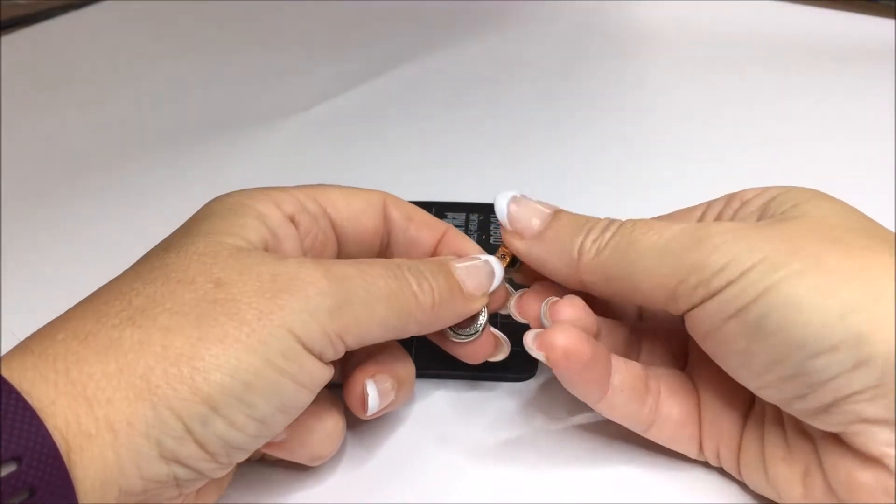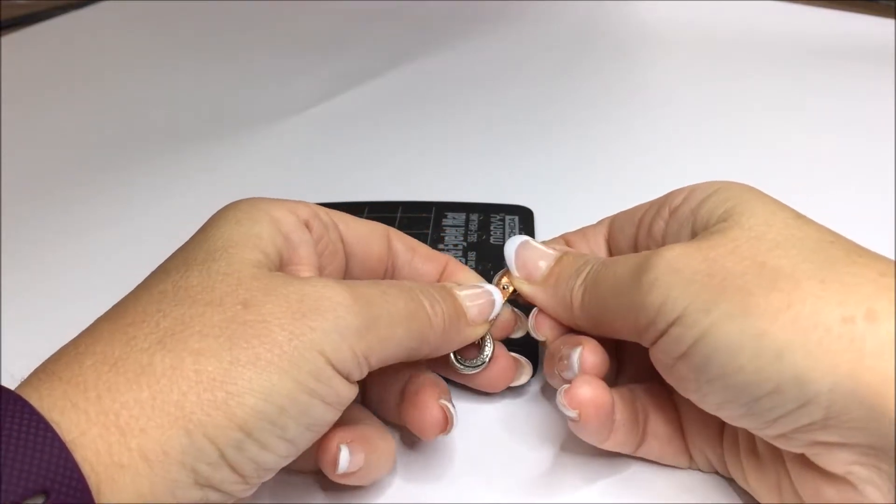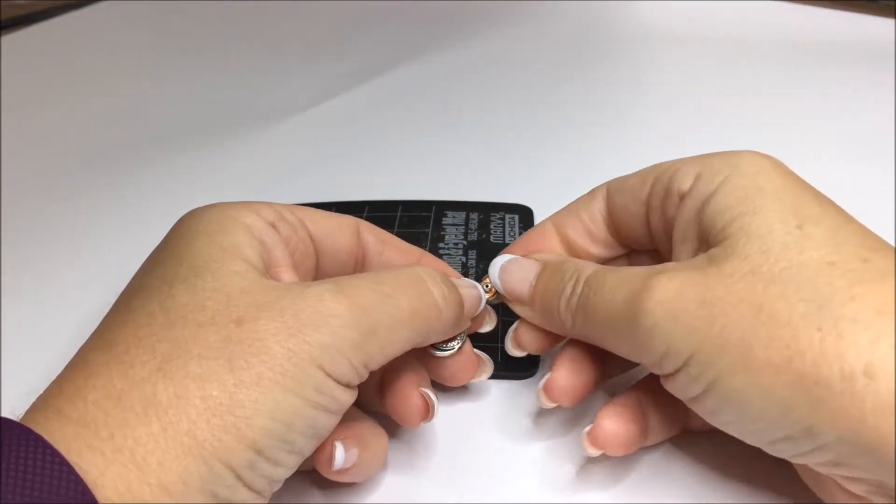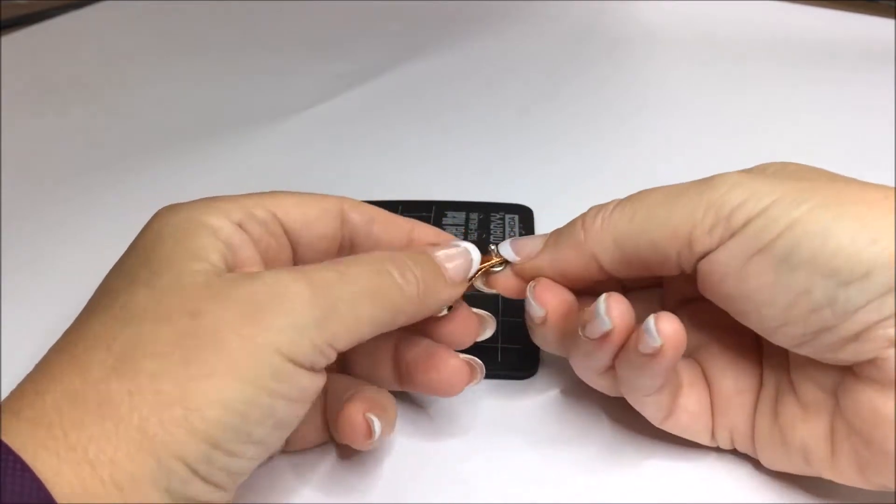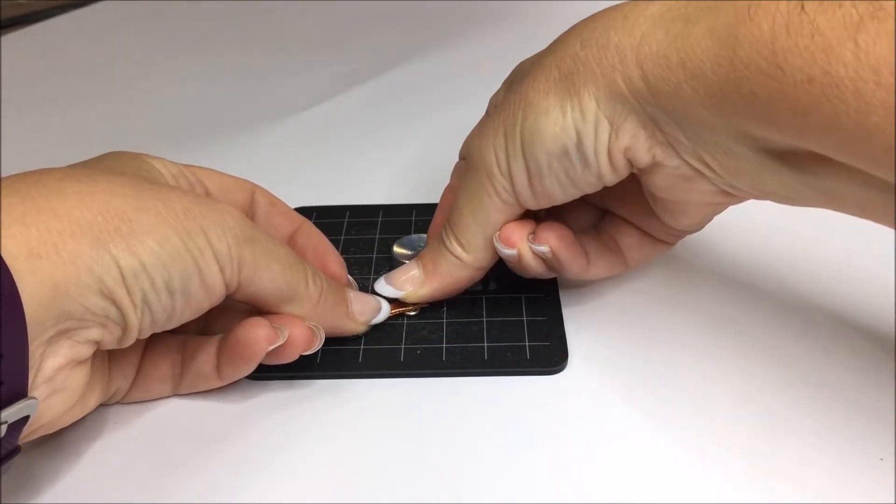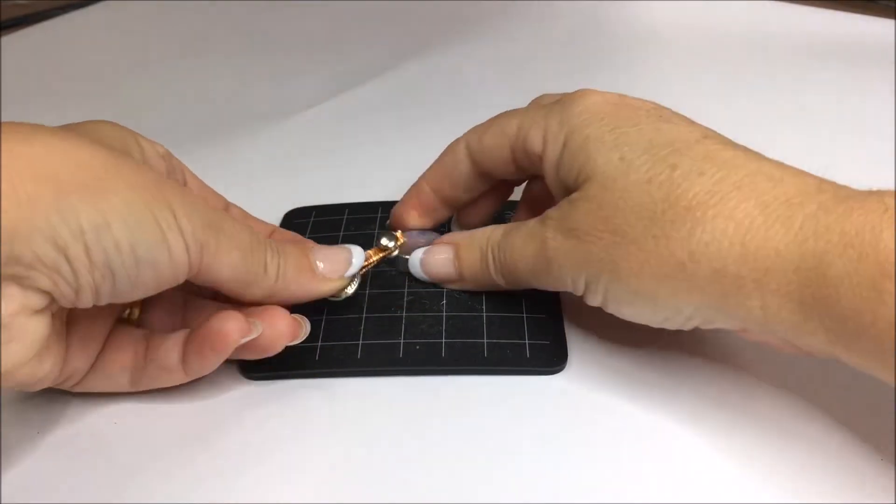Insert the rivet into one of the holes through both layers of the lace. Snap the cap onto the shaft and place the rivet in the center of the rivet setter.